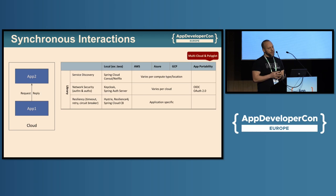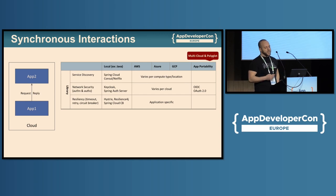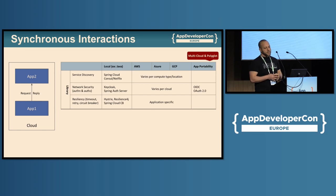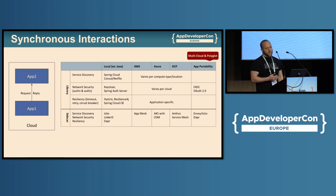These applications also need to interact over request-reply, for which you need service discovery, security, and resiliency. You can use various libraries — here I pick a few from the Java ecosystem. If you go with that approach, there are not many cloud services that can back up these libraries, and in terms of portability, there are not many common standards. The best options are from the security space with OIDC and OAuth2. Another approach is to use sidecars — for example, a service mesh or something like DAPR — and most cloud services will give you a service mesh as a service based on Envoy, which can be your portability layer.